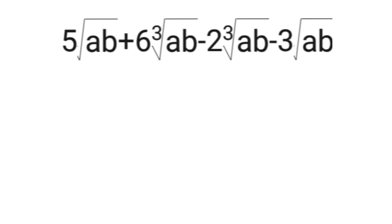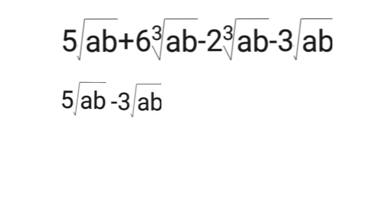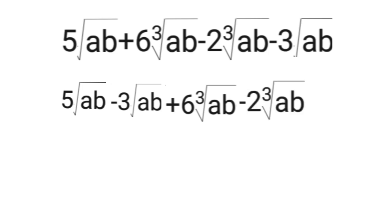For number 2, we have 5 square root of ab plus 6 cube root of ab minus 2 cube root of ab minus 3 square root of ab. What we're going to do is combine like terms — we need to combine radicals with the same index and the same radicand. So we group: 5 square root of ab minus 3 square root of ab, and then 6 cube root of ab minus 2 cube root of ab.